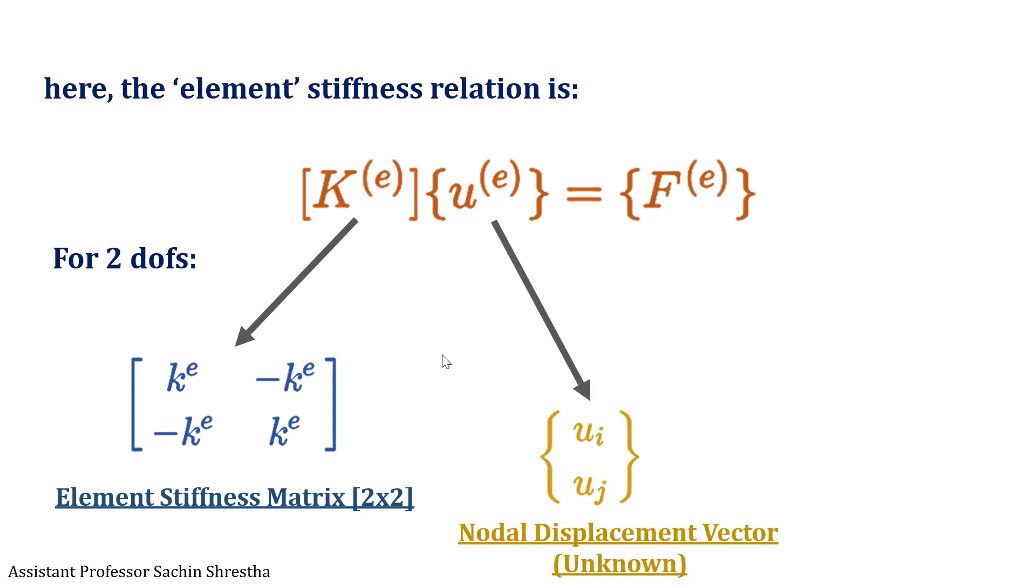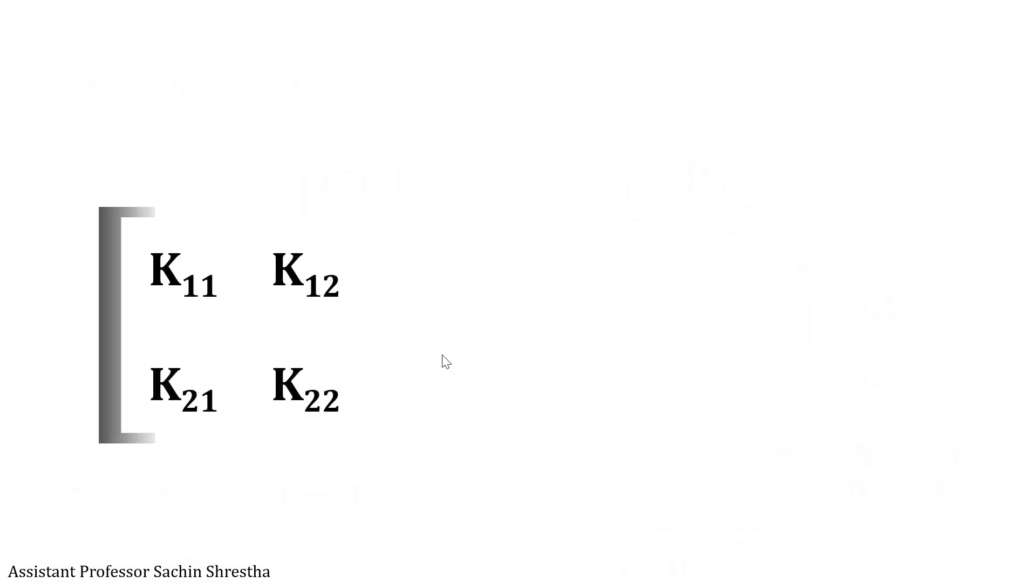U is the nodal displacement vector, which are basically the unknowns to be calculated. The F vector is the nodal force vector, which are the known parameters. We can write the stiffness matrix as K11, K12, K21, and K22.